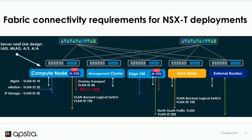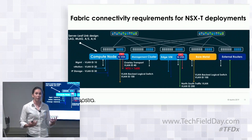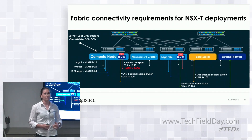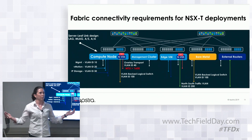The other thing to consider is the overlay interface used to carry the tunnel encapsulation for VM traffic. I need to make sure my MTU size is configured properly in my fabric to allow traffic through — at least 1600 bytes towards my server, and potentially more within the fabric.